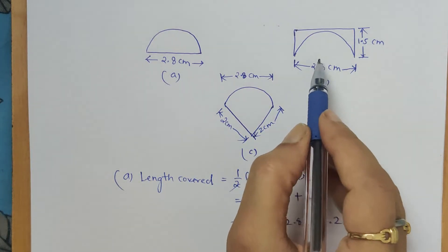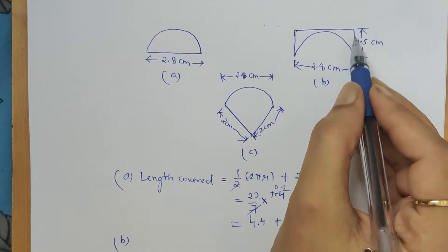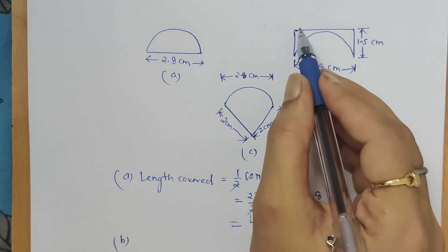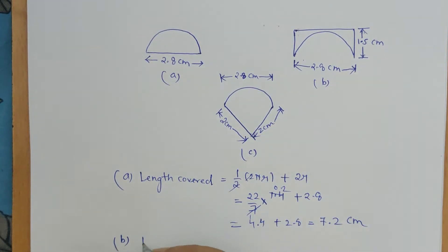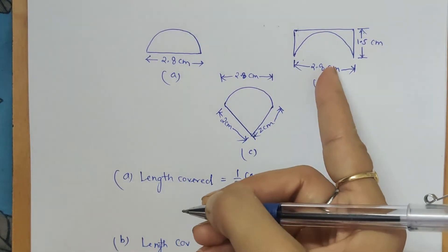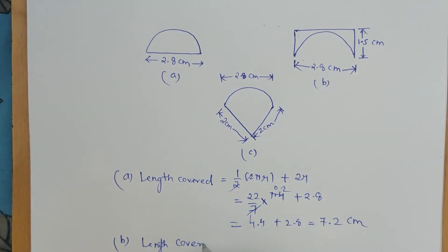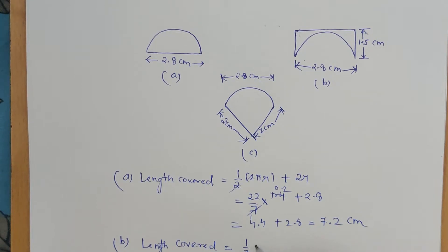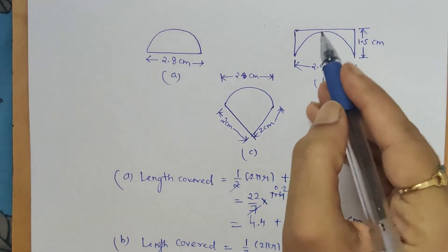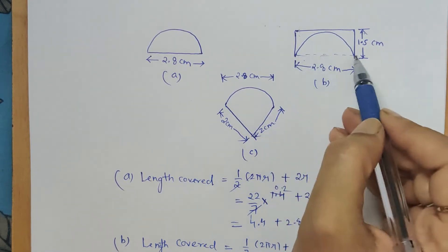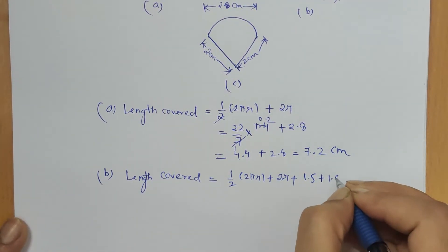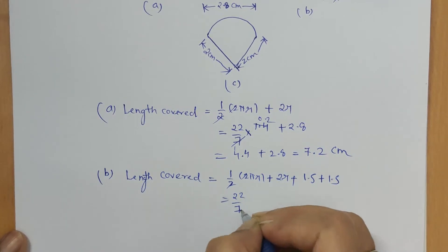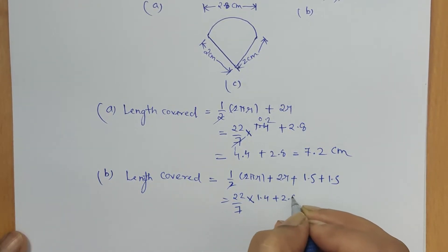Now let's calculate the length covered by the ant for this piece. So here, this is 1.5 centimeter plus 1.5 centimeter, and this length is to be added which is 2.8 centimeter. And then again, this is nothing but the diameter of the same circle, which is 2r plus these two lengths, 1.5 plus 1.5.